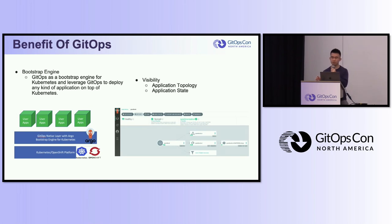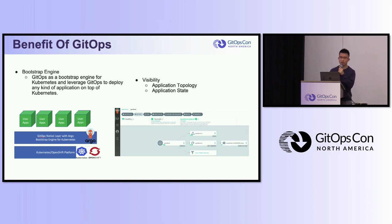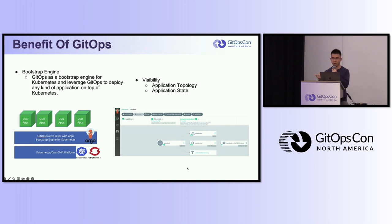You can commit all your applications into a GitHub repo, and then the GitOps tool will deploy and manage your apps across the whole cluster. Also, if you are using Argo CD, you'll see it has a very good UI — you can view dependencies, topology, and other details for your app, giving you a very clear view. You can also view the deployment process and check any errors for debugging.